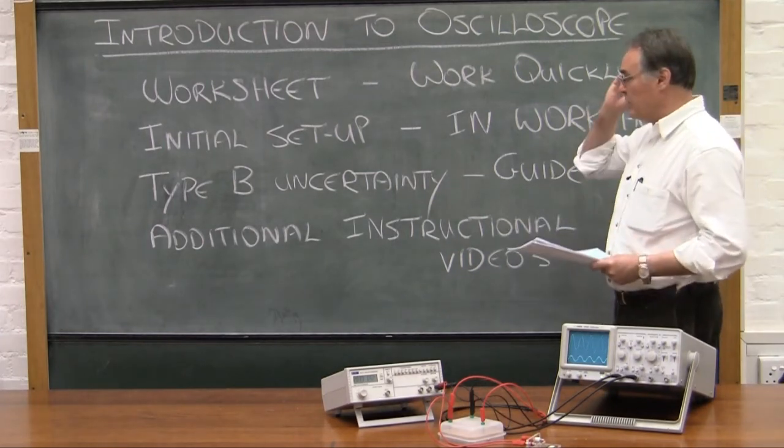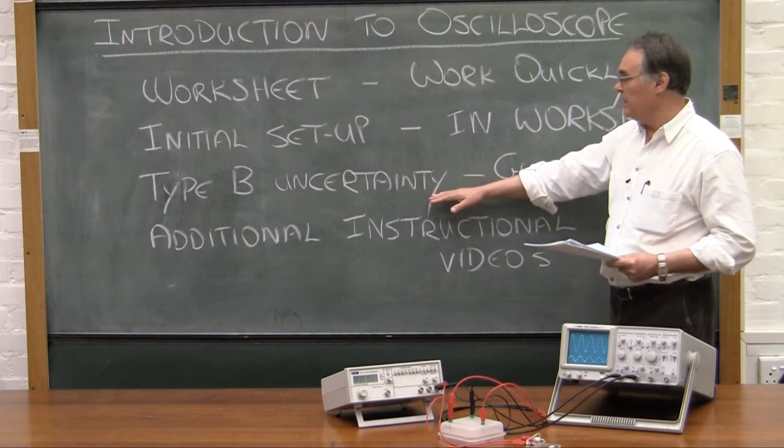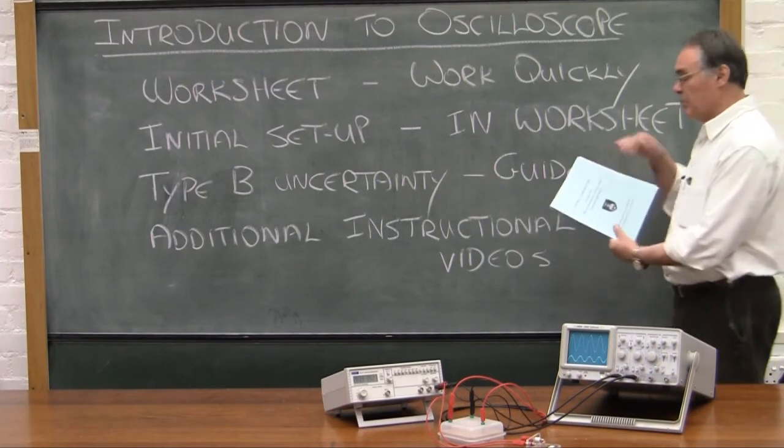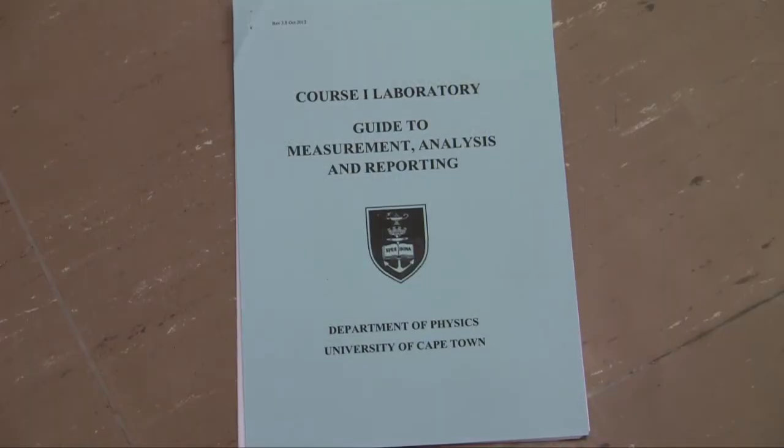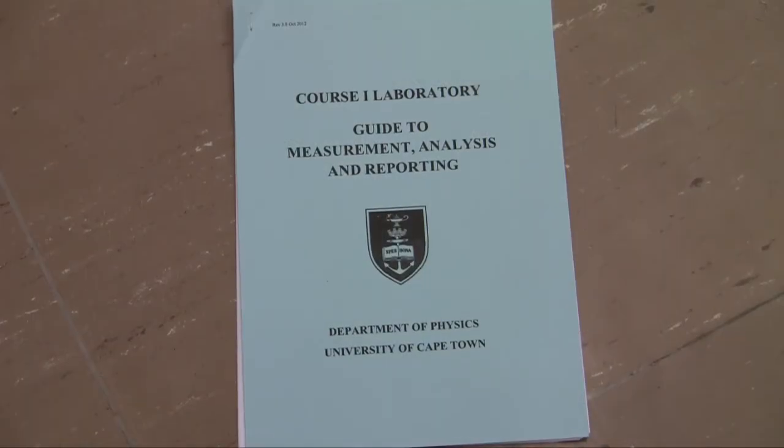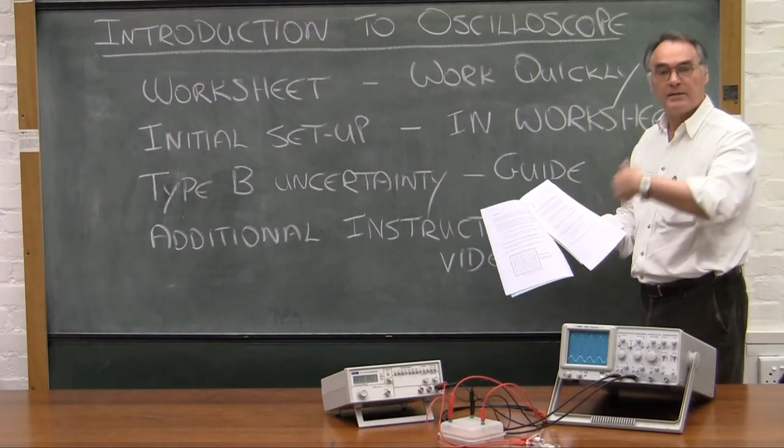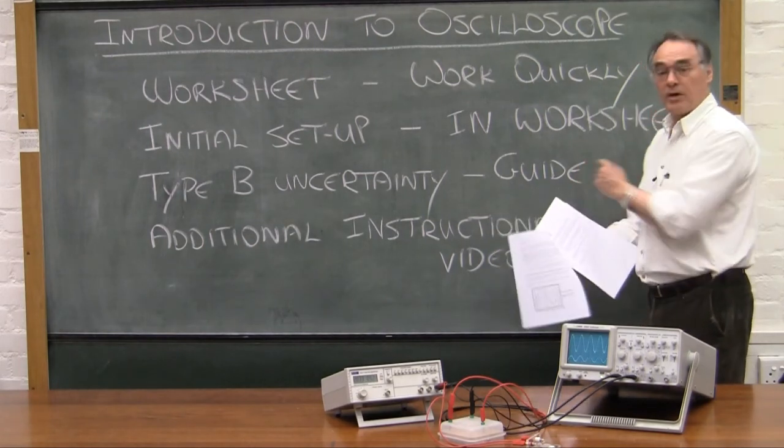Another part of the work, an important part of the work, is that you're going to do a lot of Type B uncertainty analysis. Now, there is in the blue guide a complete example of how to do this work. Make sure that you work through this example carefully right at the beginning. It will save you a lot of time as you go further along.